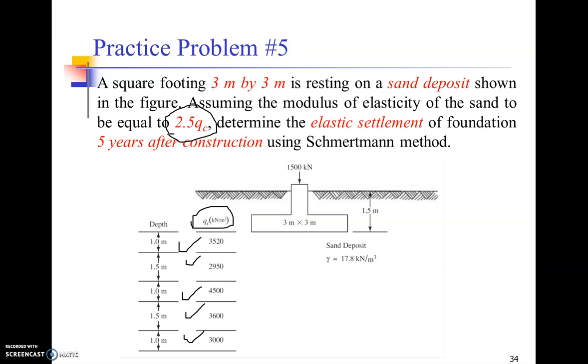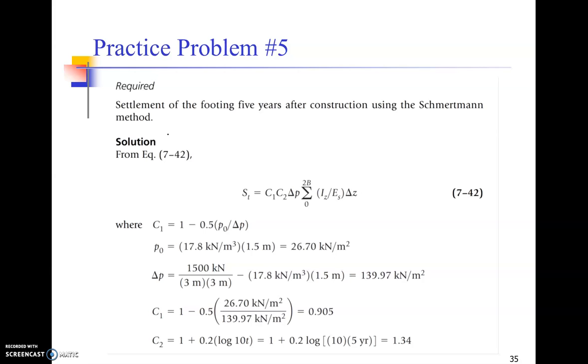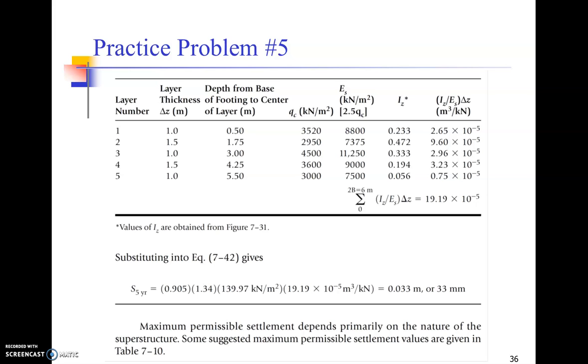The very first step is to use this formula, but before you use this formula, make sure that you calculate C1, the overburden pressure at the base of the foundation, and the total pressure at the base of the foundation divided by the area, and then C2. Once you have these factors, you have to solve it in the form of a table.